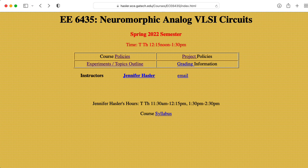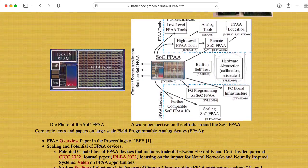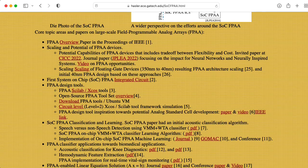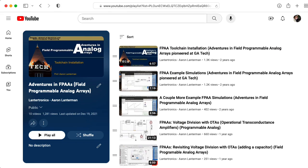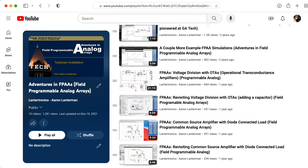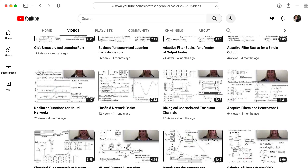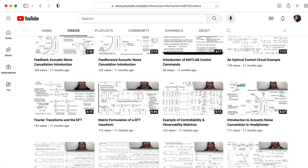Jennifer also teaches a class called Neuromorphic Analog VLSI Circuits that makes extensive use of field programmable analog arrays that use floating gate technology. So I would recommend that you check out Jennifer's website to learn more about these things. And I've been documenting my own explorations in a playlist titled Adventures in FPAAs. But the place on YouTube you really want to go is Professor Hassler's own YouTube channel. There's all sorts of materials here for all kinds of different classes that she teaches.